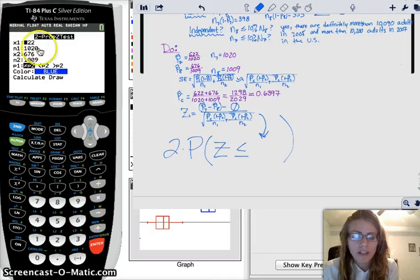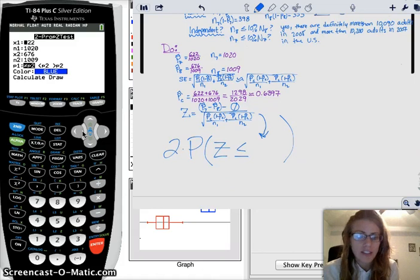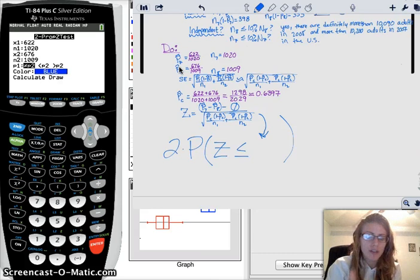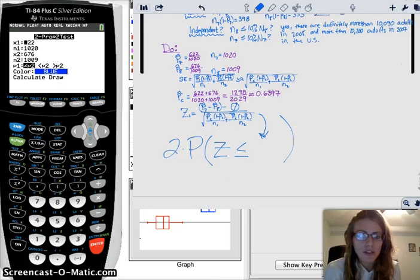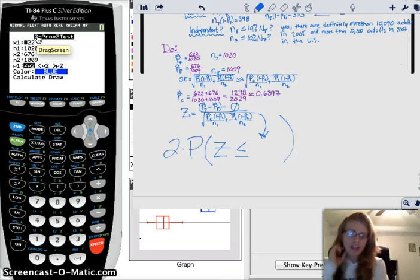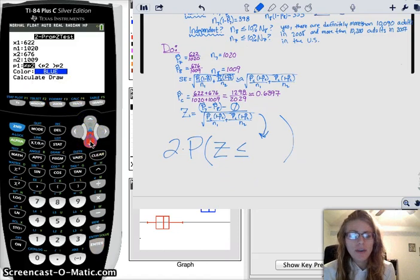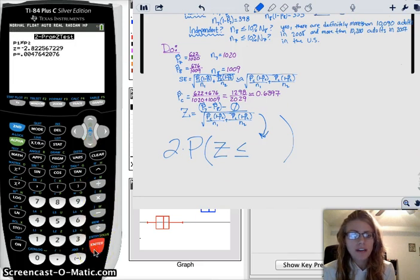And then we want to plug in all of our data. So X1 is the number of successes or the number of yeses you got. And for me, my X1, it's your first one. So I did 2007 minus 2008. So I have to include the 2007 here. Otherwise, my numbers are going to be swapped. If you did it the other way, you would just put the data opposite. And then I want to check that P1 does not equal P2. We determined that in the beginning. And then I want to calculate.